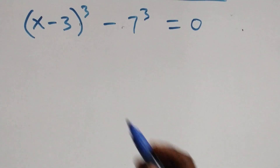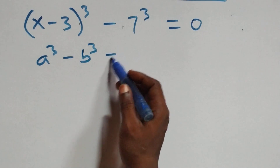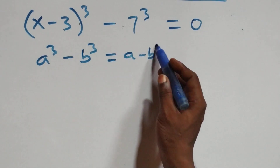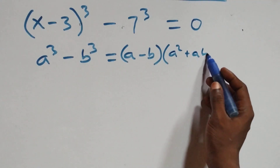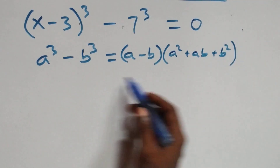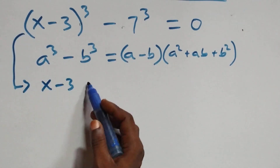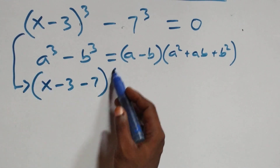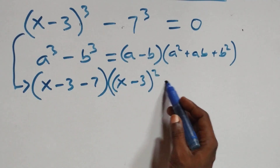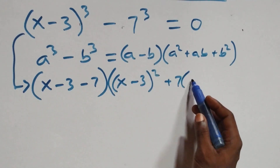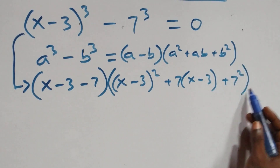Solving from the second case, this follows when we have a raised to power 3 minus b raised to power 3, which is the same thing as a minus b in brackets, times a squared plus ab plus b squared. That is, this becomes x minus 3 minus 7 in brackets, times x minus 3 squared plus 7 times x minus 3 plus 7 squared, close bracket, equals to 0.